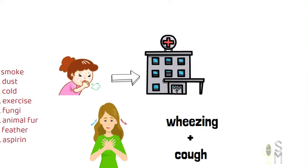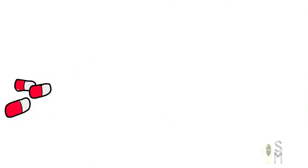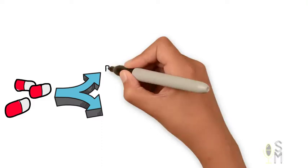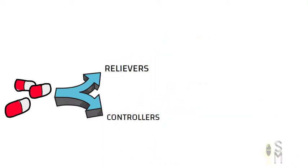Asthma is mostly completely reversible, and the medications that help with that can be divided into relievers and controllers. Relievers, as the name implies, are given to relieve the attack.